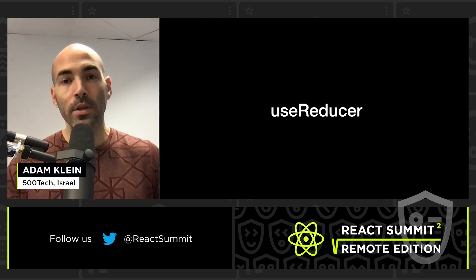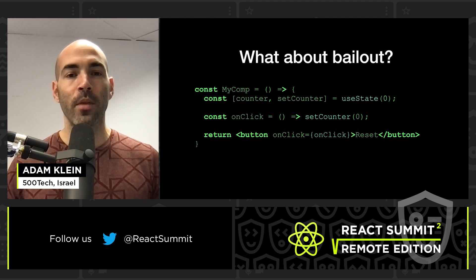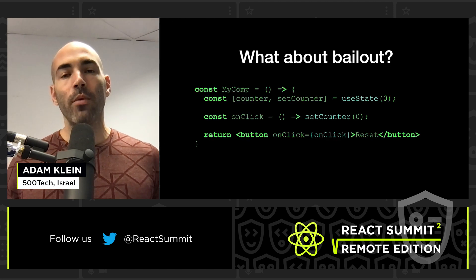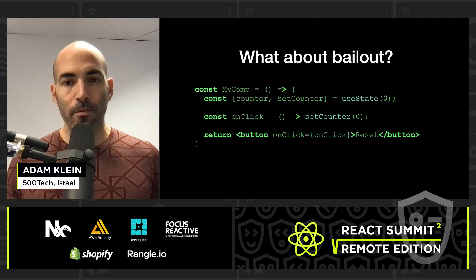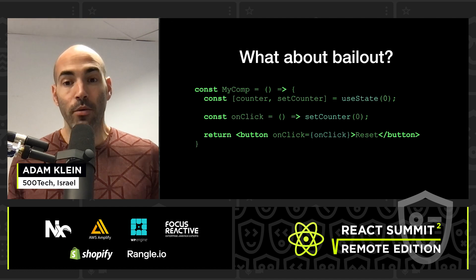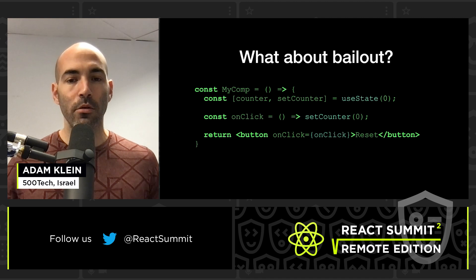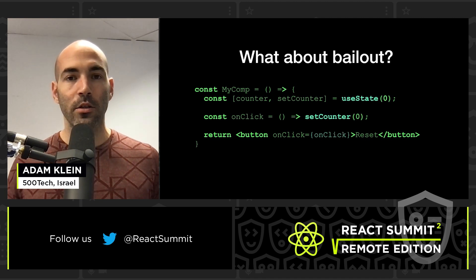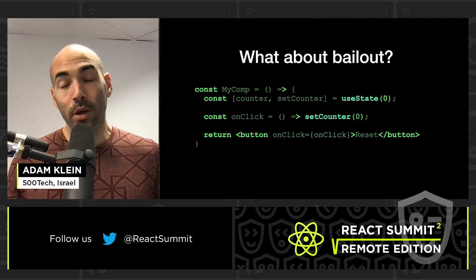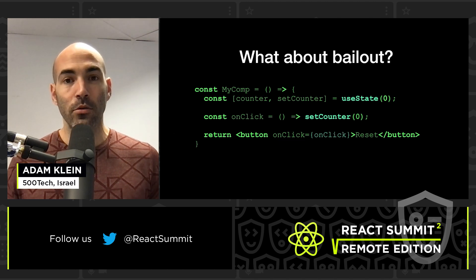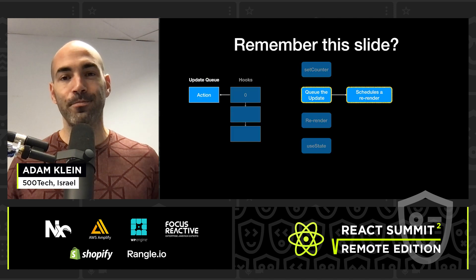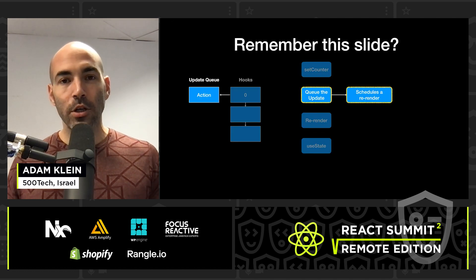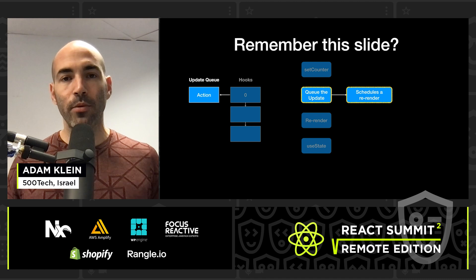You might be wondering: what about render bailout? If React only calculates the new state during render, how can it bail out of render if the new state is the same as the old state? For example, if we have a state that starts from zero and we update it to zero, you would expect React not to re-render the component.